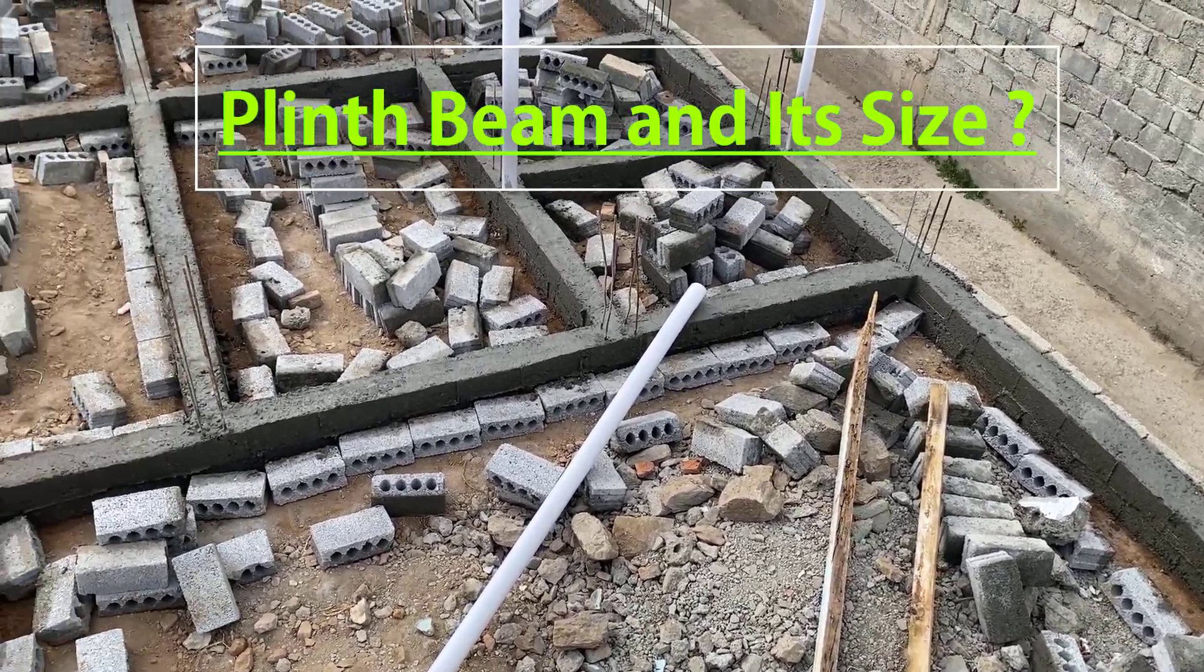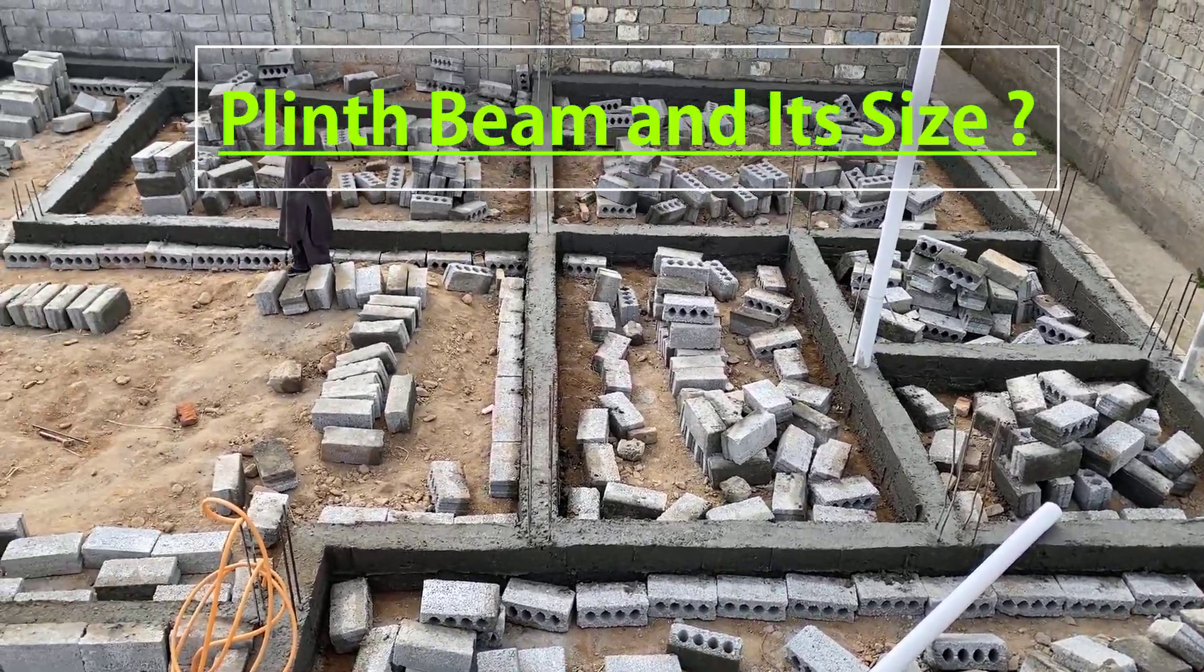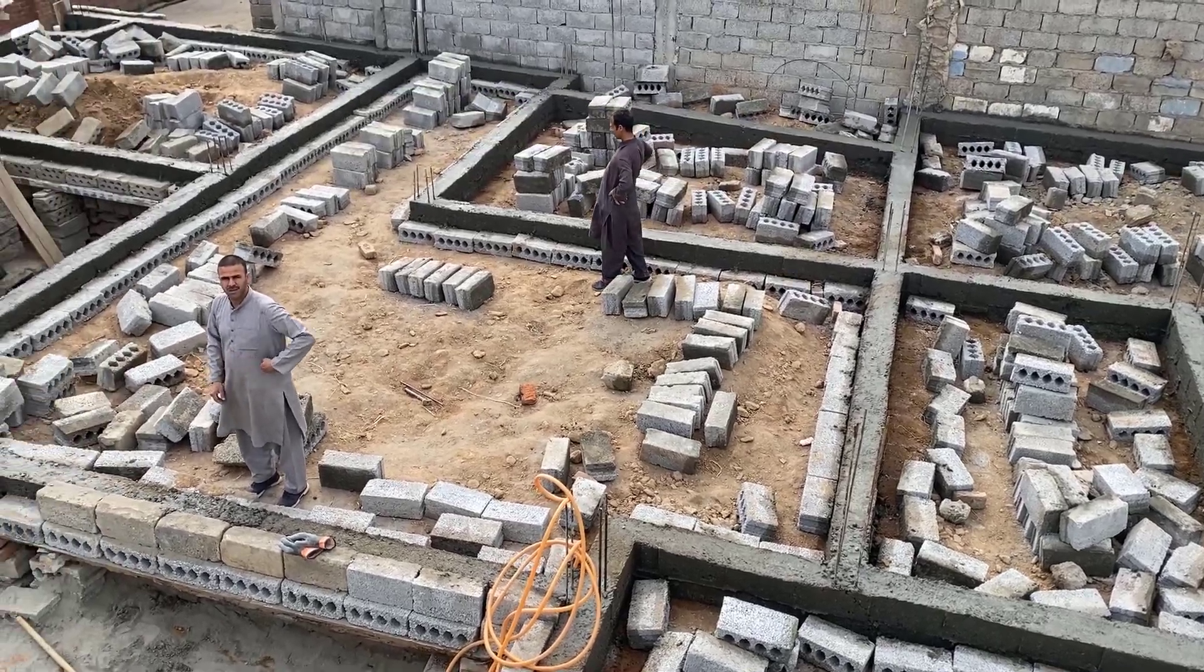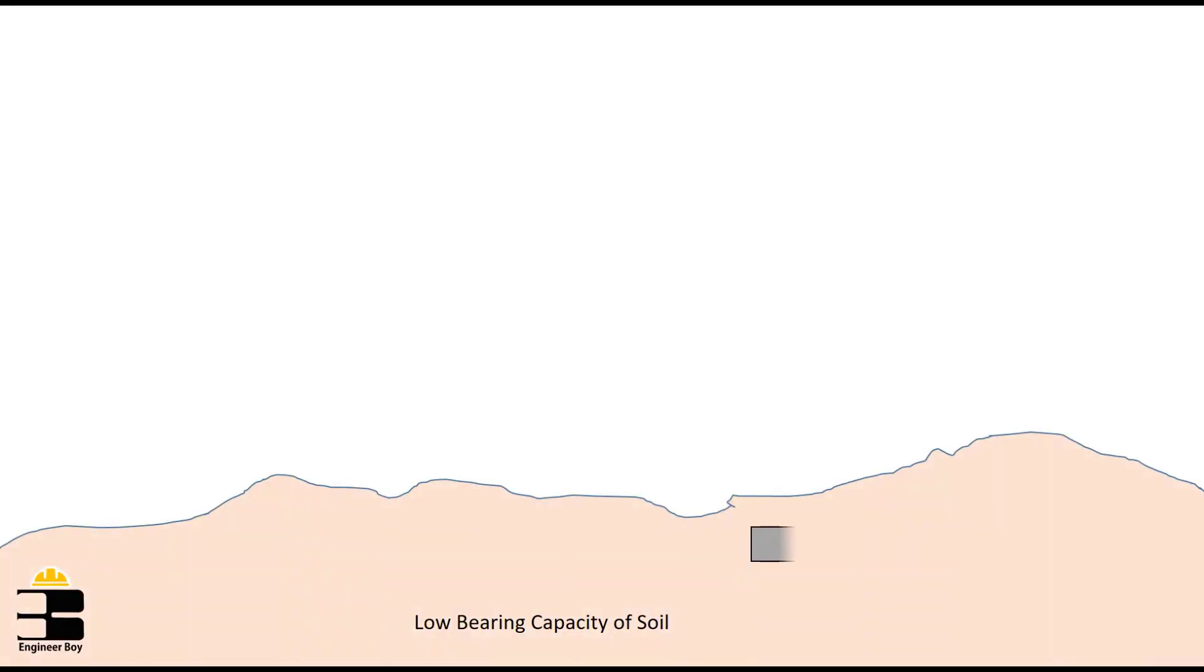Alright, so plinth beam is a reinforced concrete beam constructed at the plinth level of the building, which are typically placed at the junction between masonry wall and the foundation.